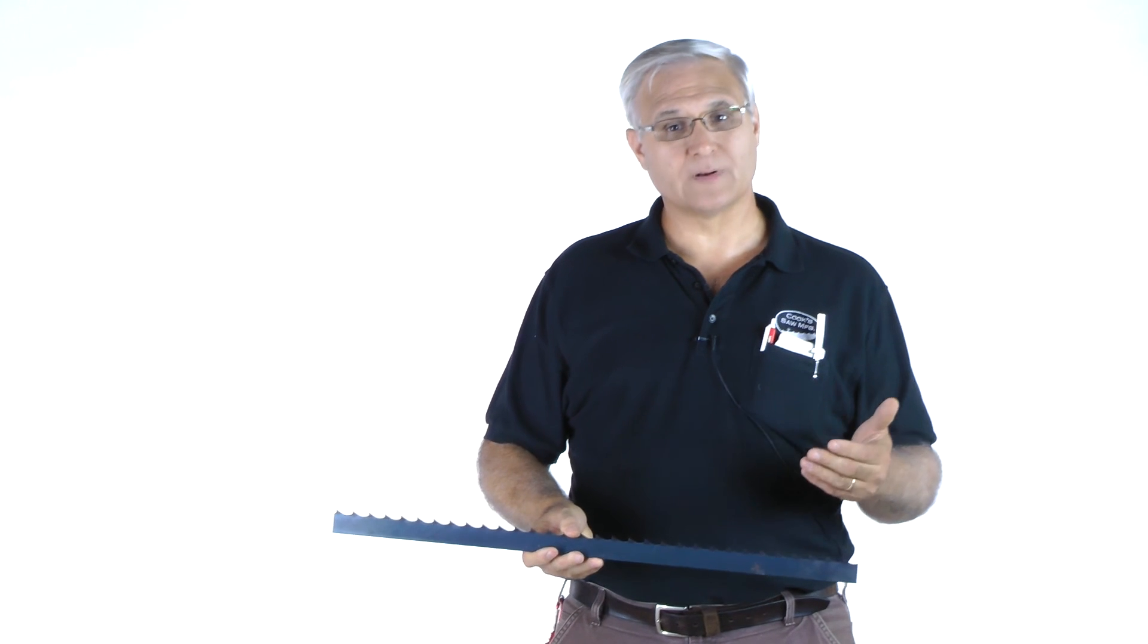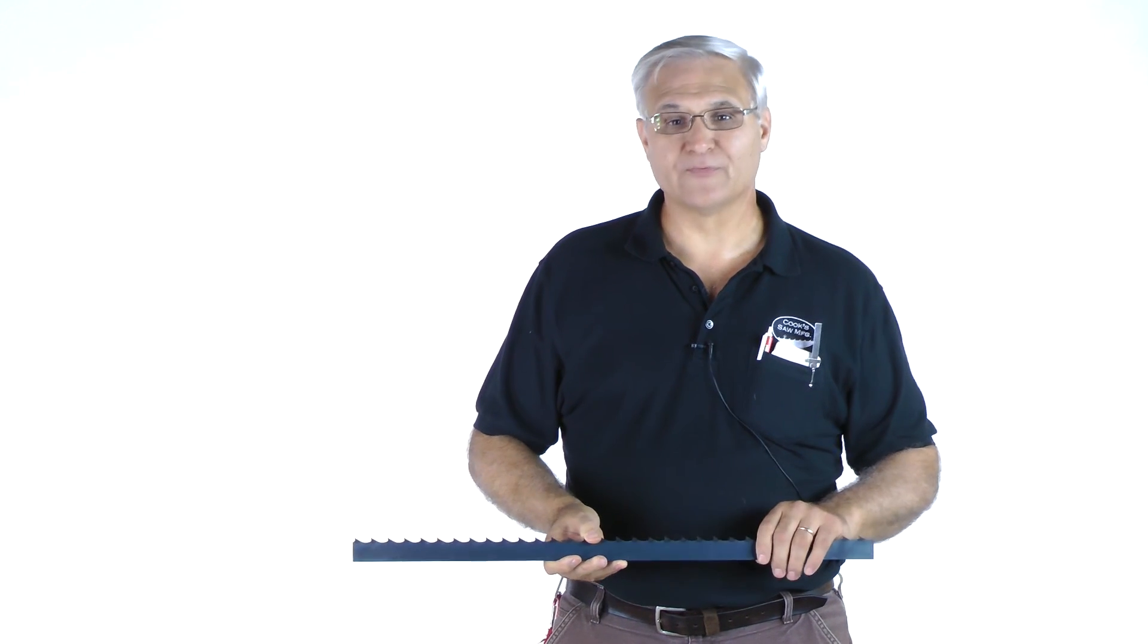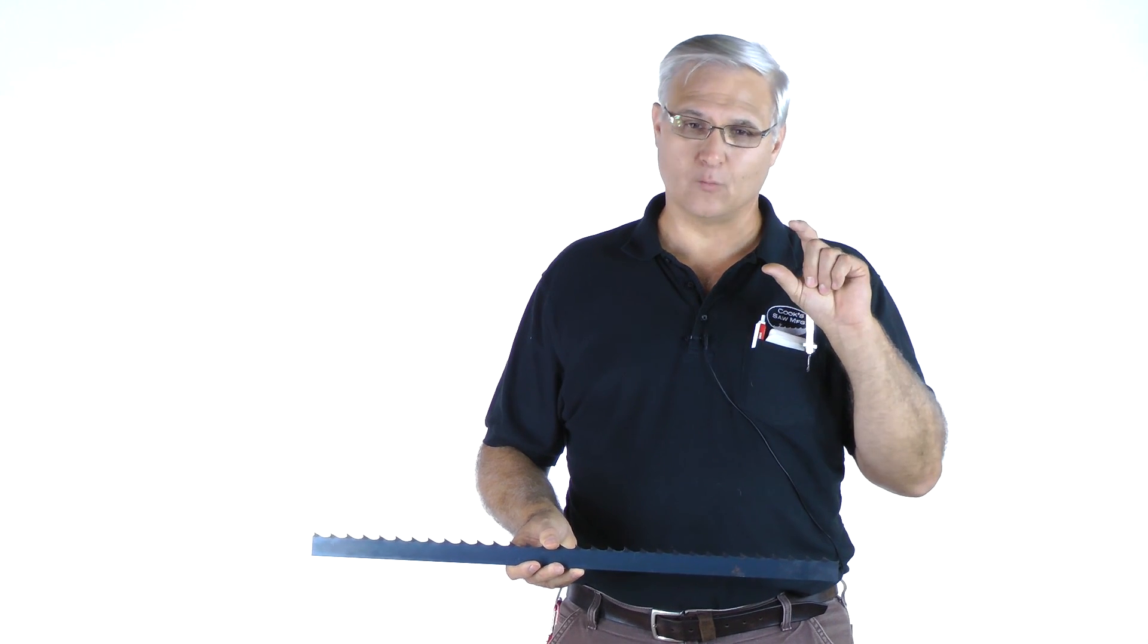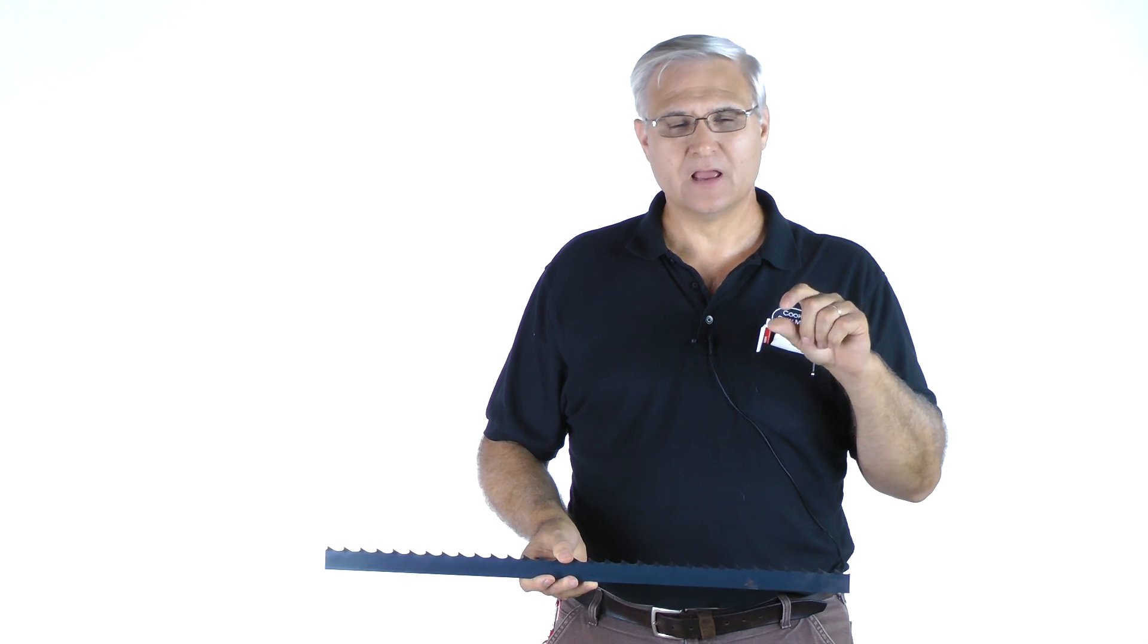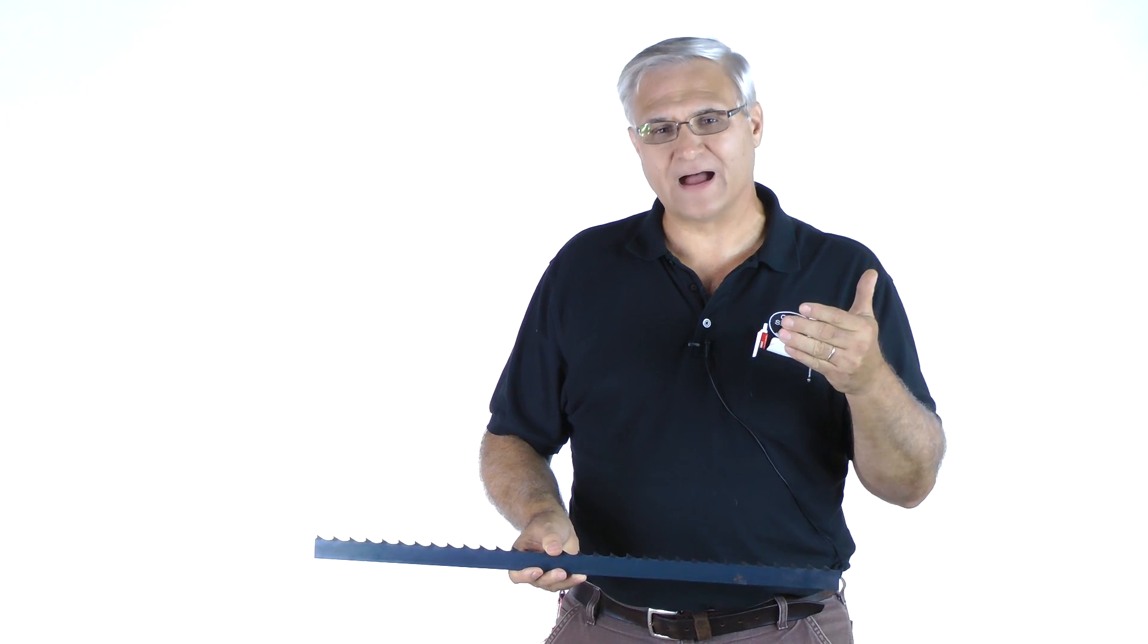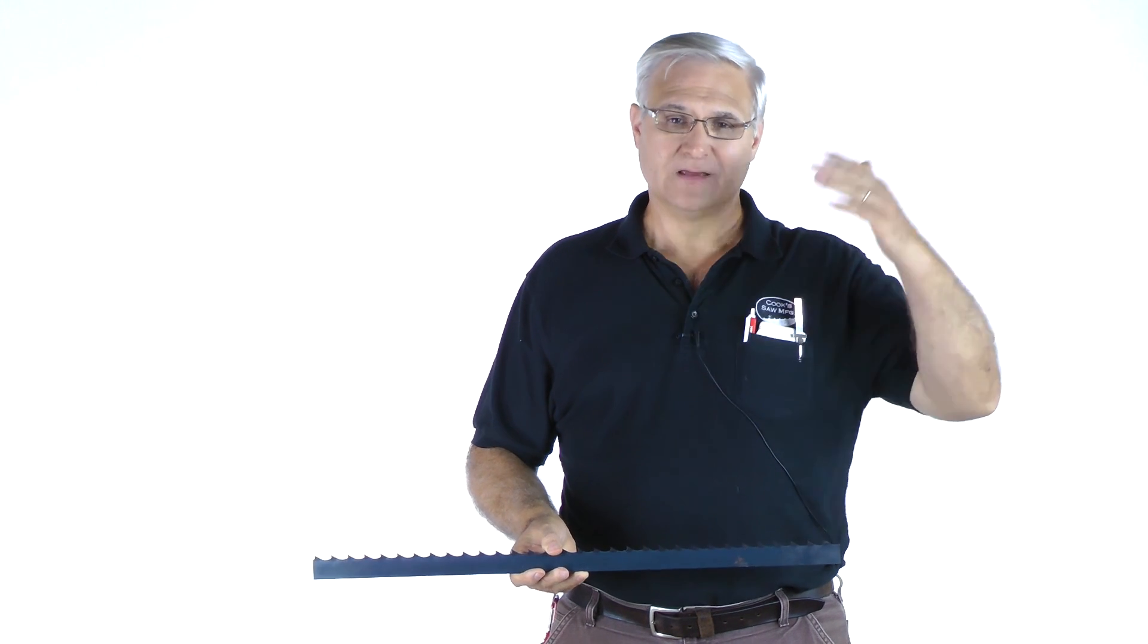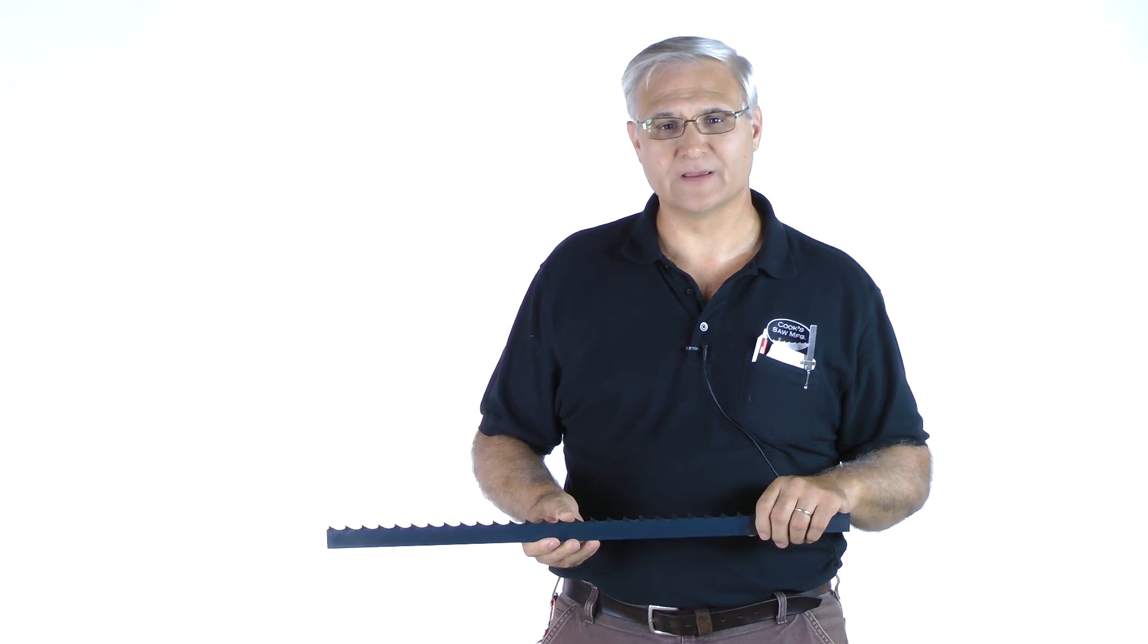But essentially, inch and a quarter blade, seven eighths tooth spacing works well, 10 horsepower up to around 30 horsepower. Larger than that, in the wider blade, one inch and a half blade, especially in the 050, we like to go to the one inch wide tooth spacing. And then with a two inch blade, of course, a one inch wide tooth spacing.